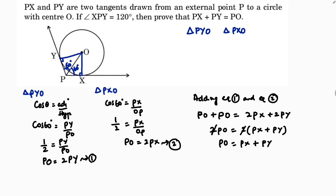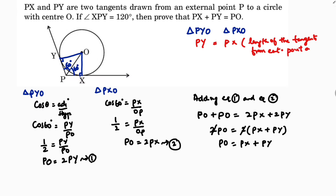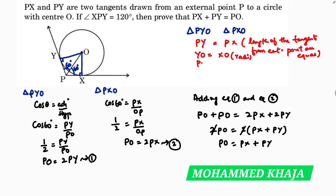This is how we solve it. Since it is for 2 marks, if you want you can write 60 degrees directly, but my advice is to prove the two triangles congruent first. For triangles PYO and PXO: Py equals Px because lengths of tangents from an external point are equal. YO equals XO as radii. And PO equals PO as the common side. Therefore triangle PYO is congruent to triangle PXO.